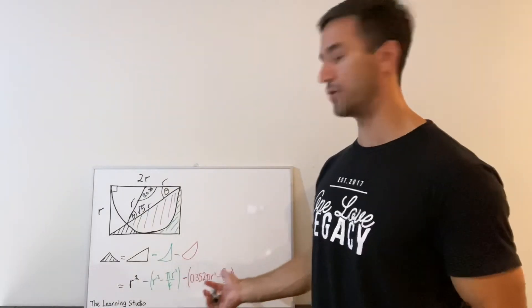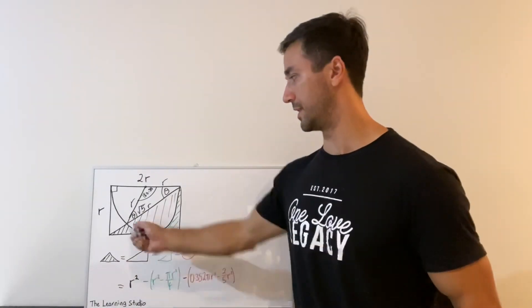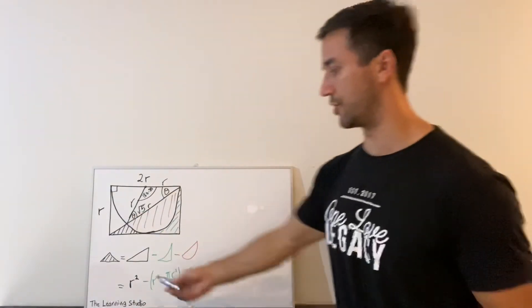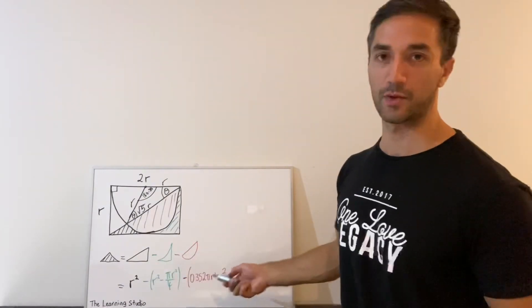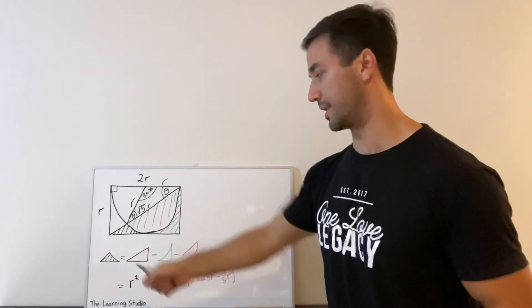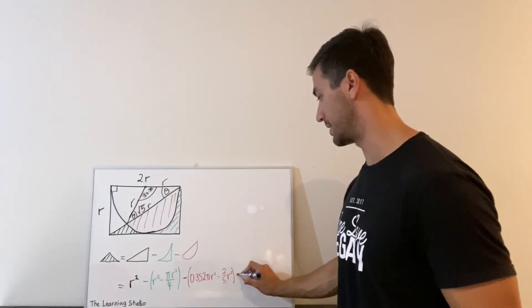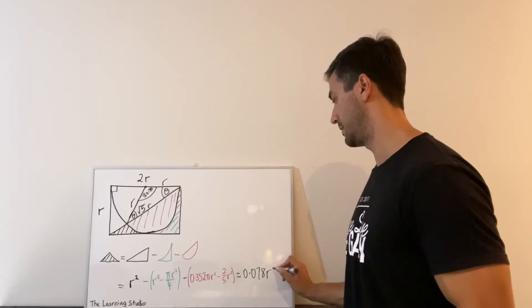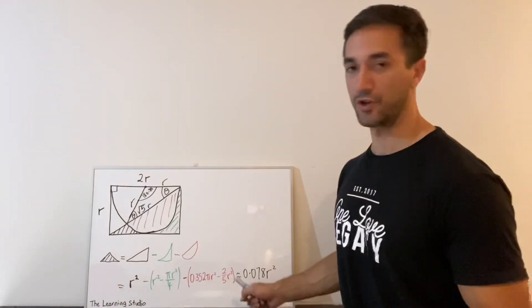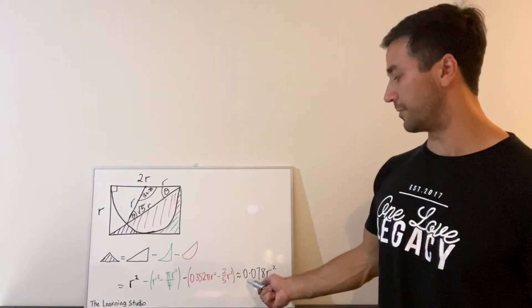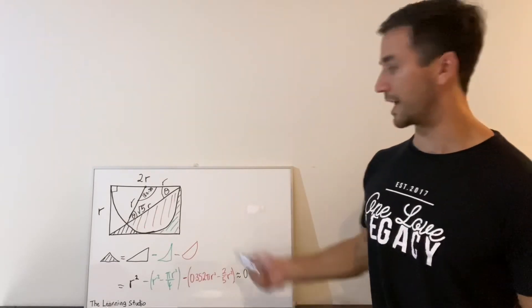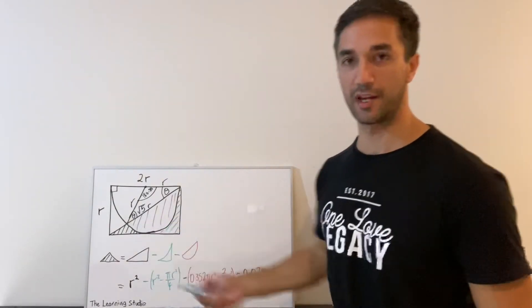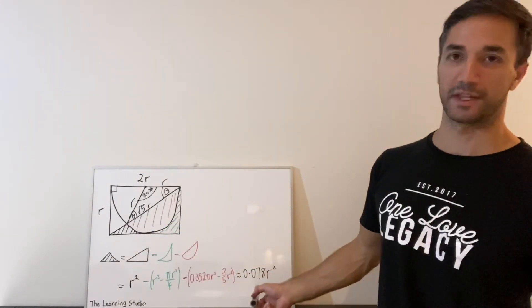Okay, so now putting all of that together, we get this expression for the area of this little section we were trying to work out. And if you plug all that in, notice that all of these are just r squared terms. So you can add, subtract them all together. And this comes out to be approximately this. And so one way you can look at this result is to realize that, so remember, r squared was actually the area of this triangle. And so what this is telling us is that this little section here is about 7.8% of the triangle, which I guess visually makes sense.